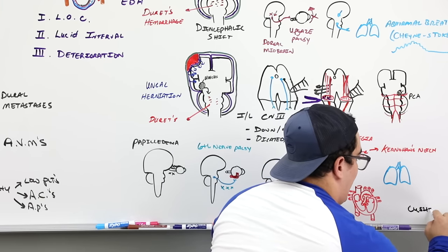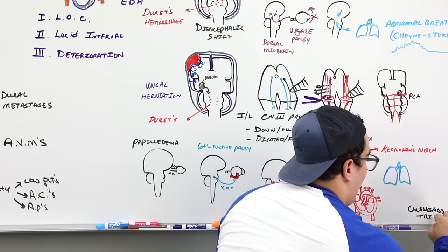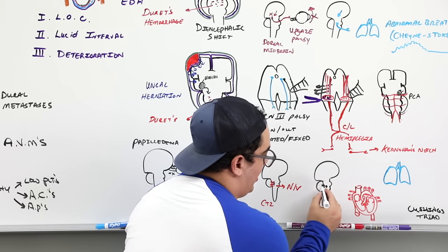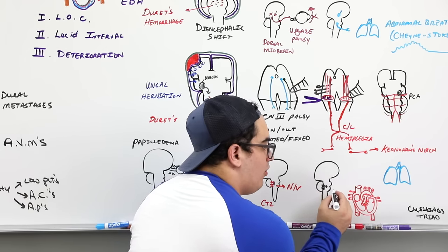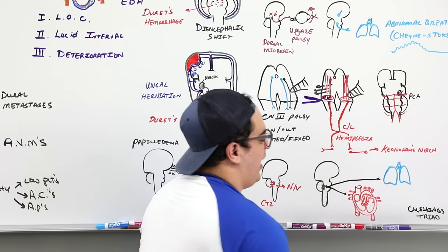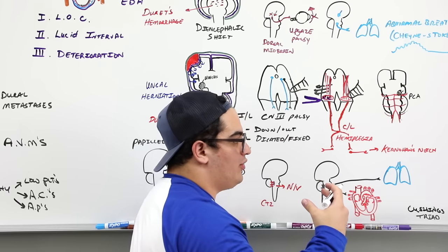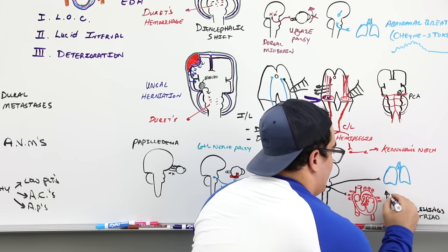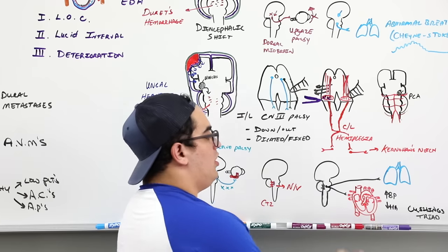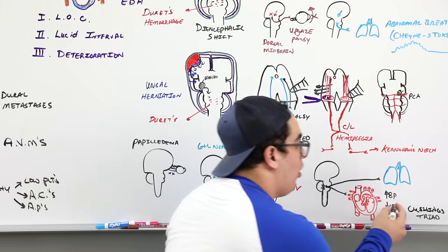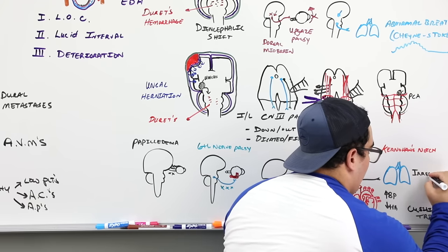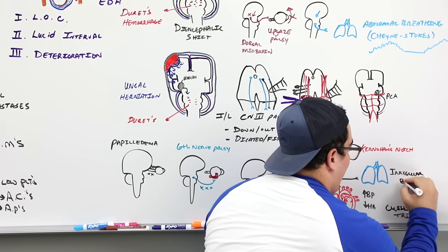Cushing's triad results from very high intracranial pressure compressing the cardiovascular and respiratory centers in the medulla. The body tries to increase cerebral perfusion by raising blood pressure, which reflexively causes bradycardia. The combination of hypertension, bradycardia, and very irregular breathing patterns constitutes Cushing's triad.